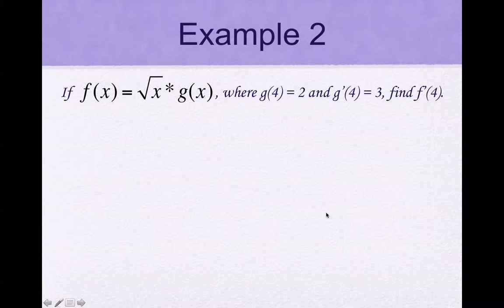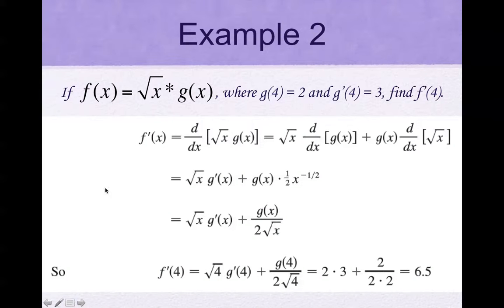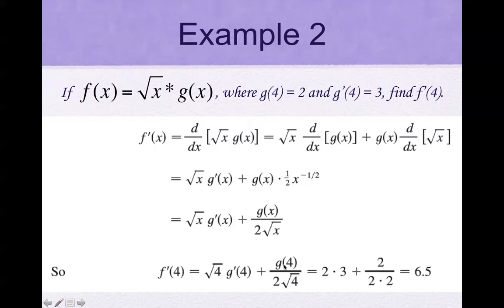If f(x) = root(x) times g(x), where g(4) = 2 and g'(4) = 3, find f'(4). Using the product rule: f'(x) = root(x) times the derivative of g plus g divided by 2·root(x). Plugging in 4: root(4)·g'(4) + g(4)/(2·root(4)) = 2·3 + 2/(2·2) = 6 + 0.5 = 6.5.